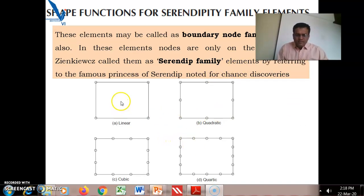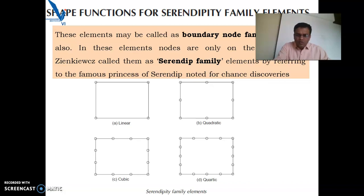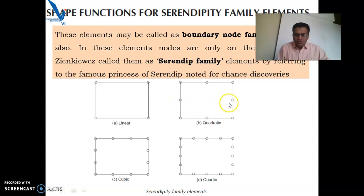Sometimes the internal node does not contribute much in the complete mesh, so these elements are used where an internal node is not required. For the 8-node rectangular element, we cannot apply the Lagrange interpolation formula because the center node is absent — along some lines there are only two nodes, not three, making the formula inapplicable.